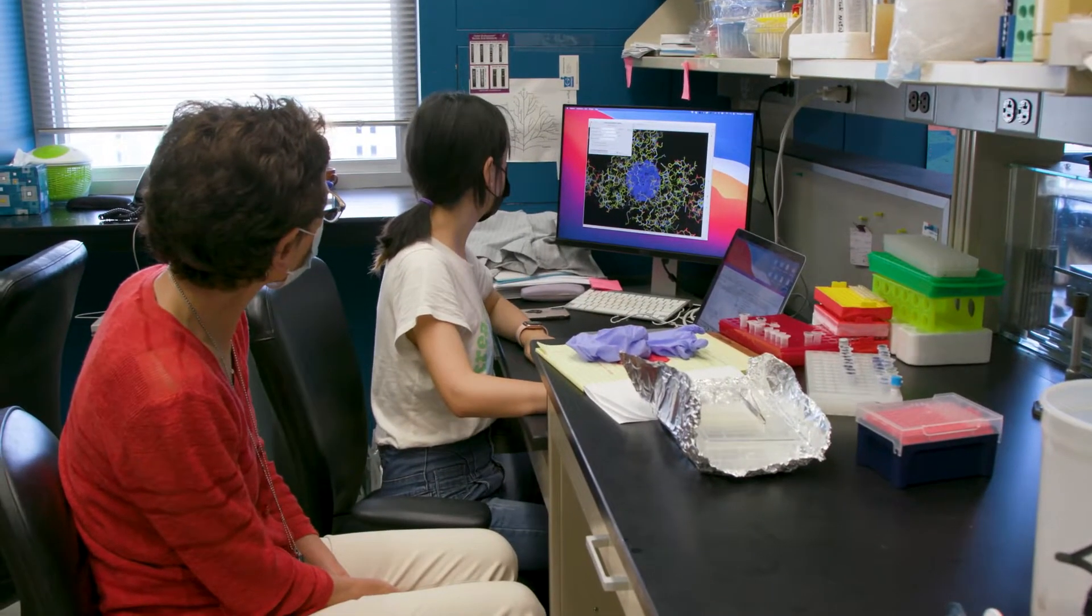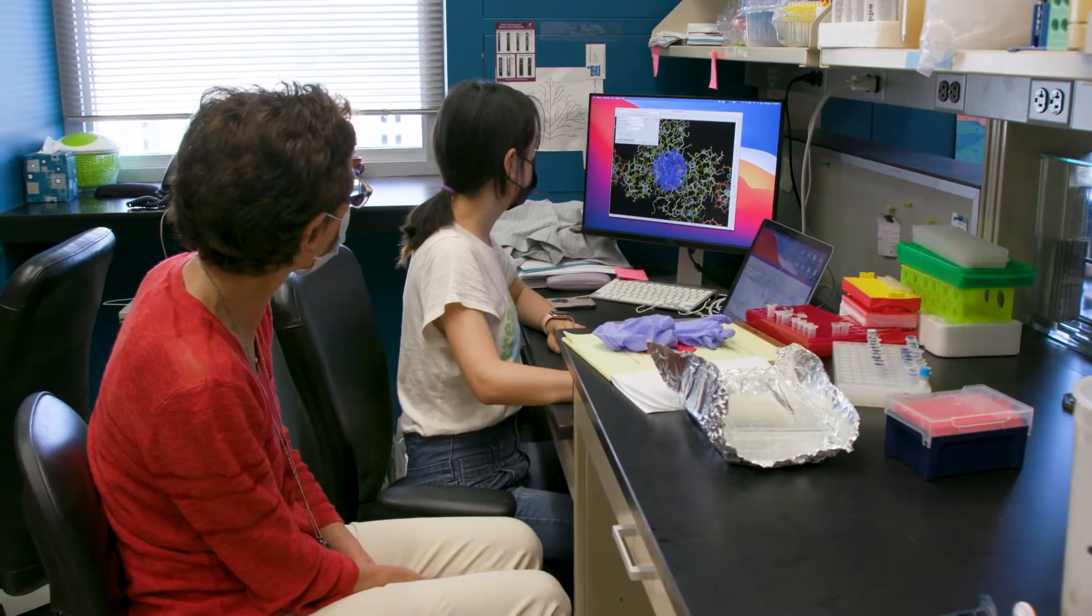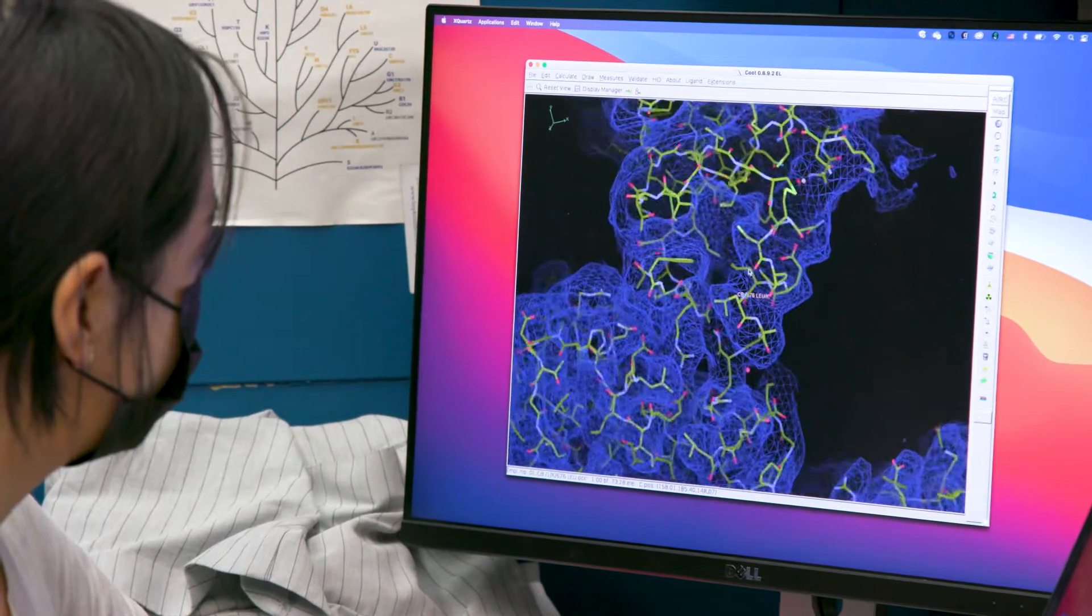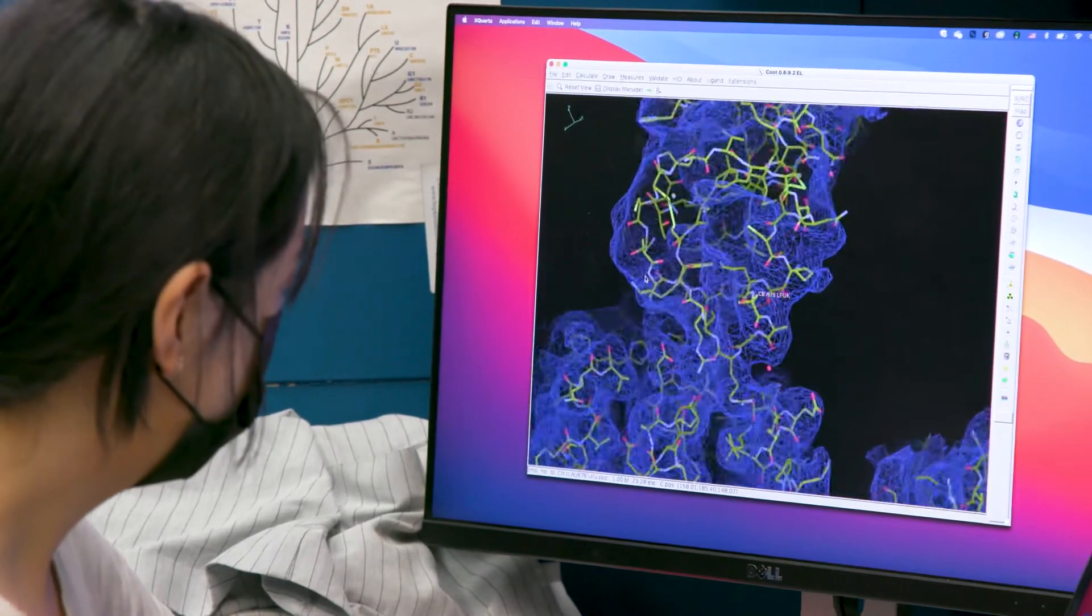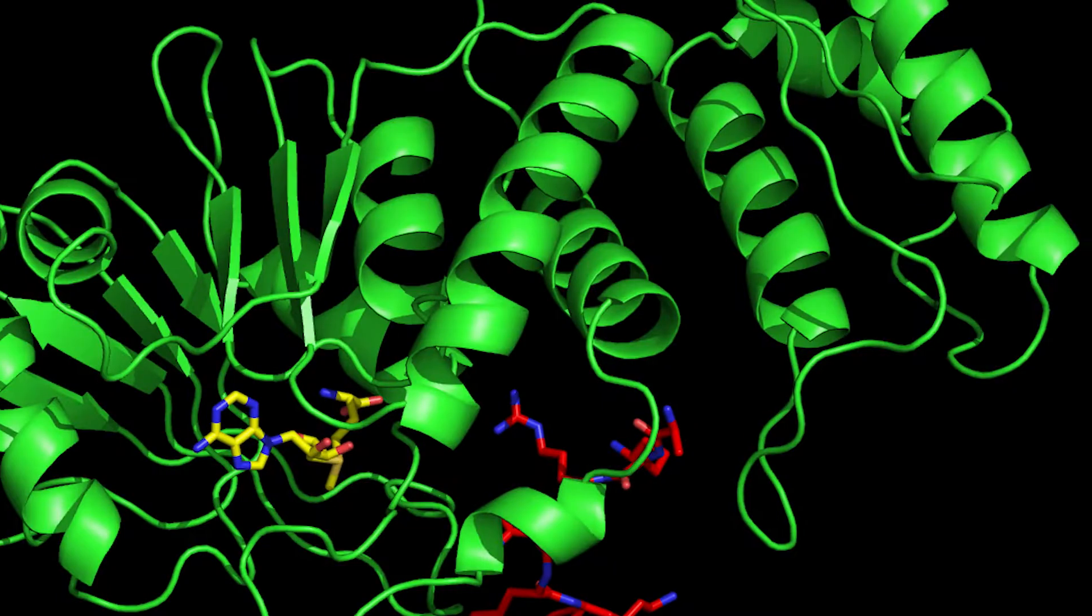My lab studies mechanisms by which genes are turned on and off using chemical tags that are attached to various proteins. The chemical tag we're particularly interested in is ubiquitin, which is actually a small protein in and of itself, and we also study other small chemical tags.